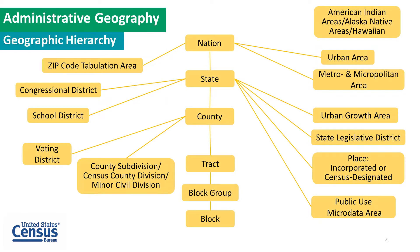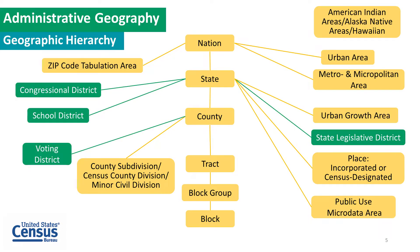This is our geographic hierarchy. We like to show people how different things nest within other things as the Census Bureau perceives it. These are the four concepts we will explore today. Congressional districts nest within the state. State legislative districts also nest within the state. Voting districts nest within counties. And school districts, which we will take a quick look at, actually nest within the state.